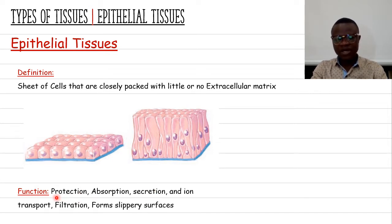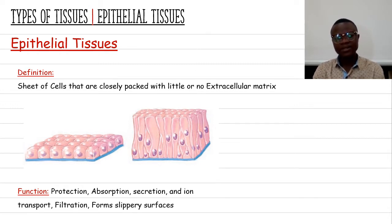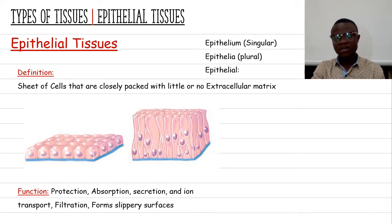Epithelial tissue provides protection for the body. It also functions in absorption, secretion, ionic transport, filtration at the level of the kidney, and forms the slippery surface of some hollow internal organs. One clarification: the word 'epithelium' is the singular form, while 'epithelia' is the plural form.